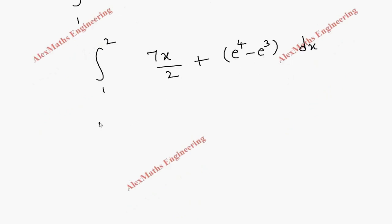Now integration of 7x by 2 is 7x by 2 we keep it as it is and x integration is x squared by 2 and this whole thing is a constant. So constant integration is constant into x and we have to substitute the limit from 1 to 2.